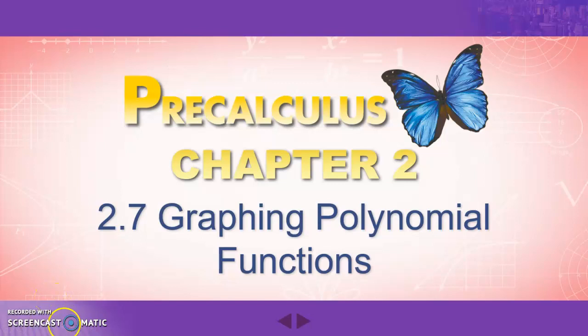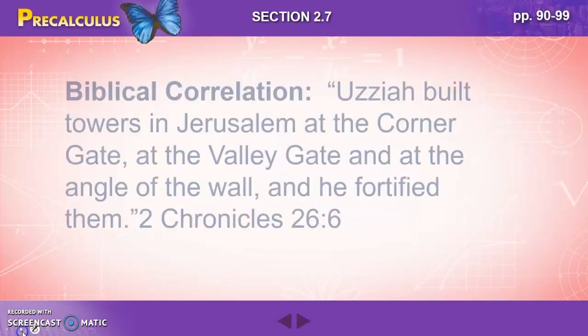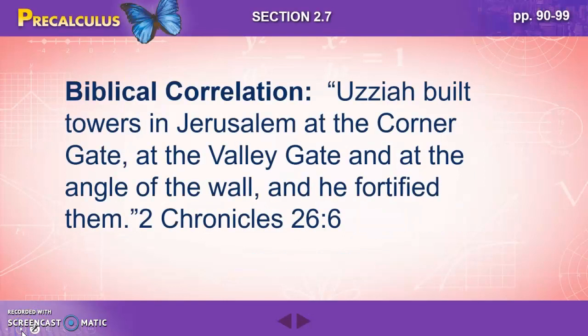We are looking at 2.7 today, the end of Unit 2, graphing polynomial functions. Again, this is a review of what you've done in the past. I'm not sure how strong your foundation is, so I'll go over this very quickly. If you have questions, be sure to ask me in class.